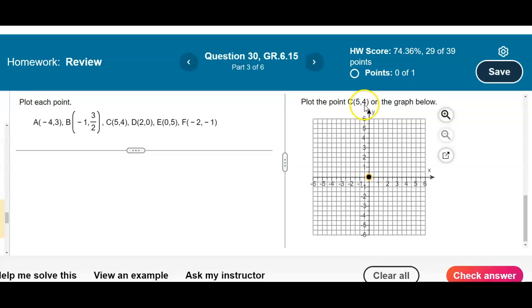Next, now we want to graph 5, 4. So that means we're going to move now to the right five times. And then we're going to go up 4. And therefore there is our point 5, 4.